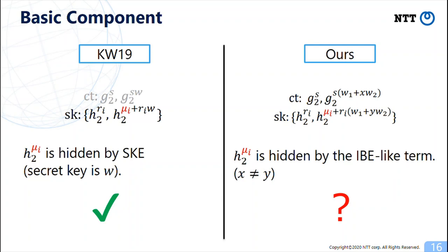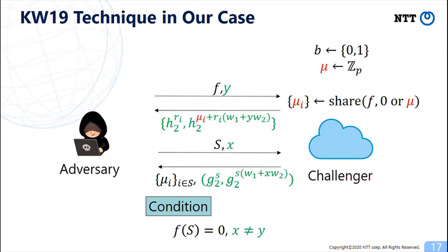This is 1-ABE game for our case. The green part is different from the original 1-ABE. Roughly speaking, secret shares are hidden like a master secret in a secret key for identity Y. For query on S, the adversary also queries on identity X and obtains a ciphertext for identity X. Here, we realize that we cannot prove the security of 1-ABE, similarly to the original case.